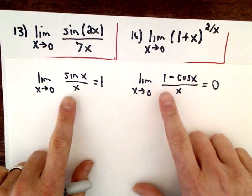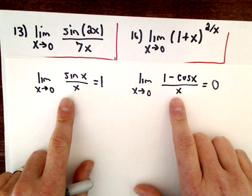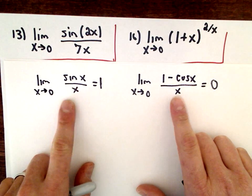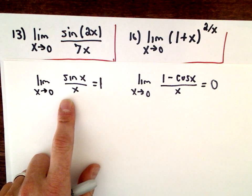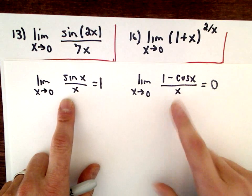The reason why these end up being important, these two limits, is because usually right after limits you start talking about derivatives. And to justify some of the derivative formulas, derivatives involve limits.